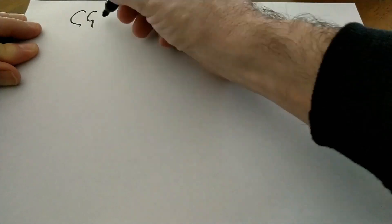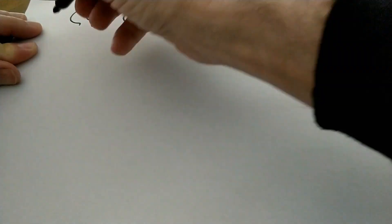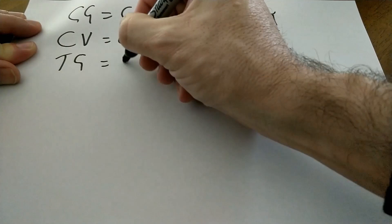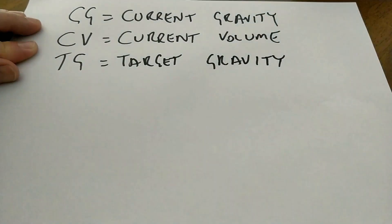To make this calculation you need to know the following: the current volume in your kettle, the current gravity in your kettle, and naturally your target OG for your product. So let's run through an example of how the dilution calculation works.